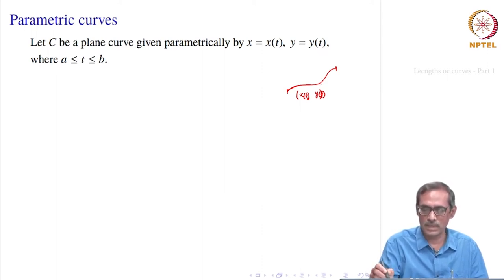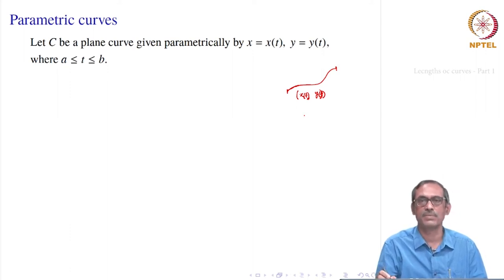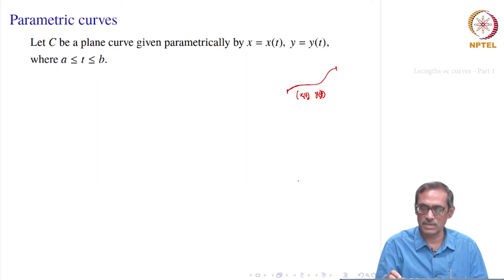Basically, t need not be time. If the curve is given as a function y equal to f of x, you can think of x as the parameter itself. But in general, you can think of another parameter t. As t varies over some interval, the x-coordinate is a function of t, and the y-coordinate is a function of t, giving the point x comma y. That is how the curve is drawn.